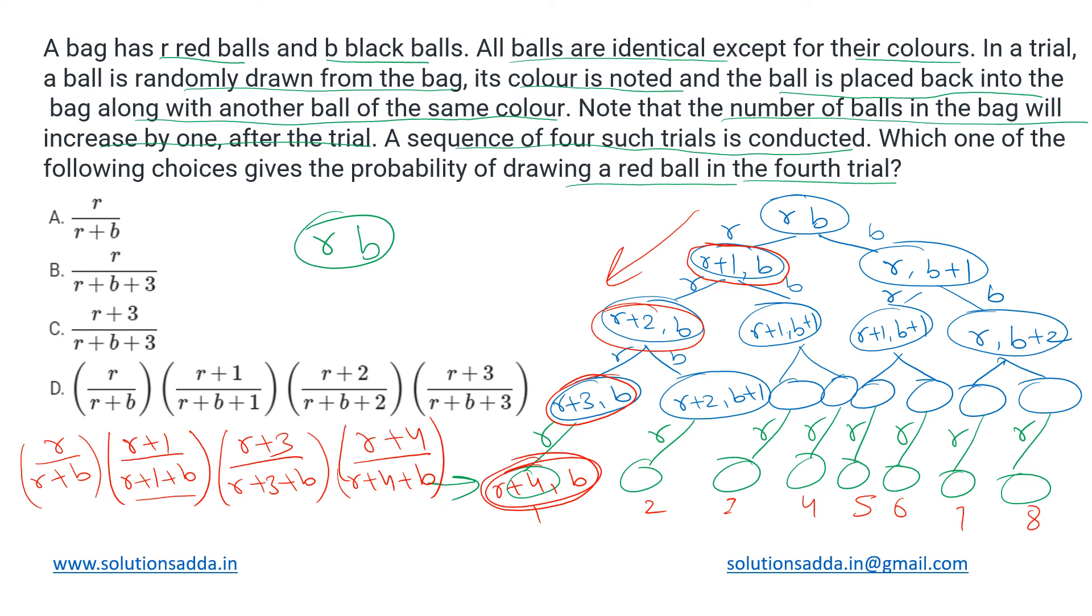This is the probability we got for this first branch, and the same thing we have to repeat for all of these eight branches. Then we'll be adding the results of all eight branches, which will be our resulting probability. After doing that, it will turn out to be r upon r plus b. Once we calculate all the branches, most of the things would be taken out as common and it would be easy to simplify. It is a bit lengthy but not that difficult. After simplification, the answer for this question would be A.